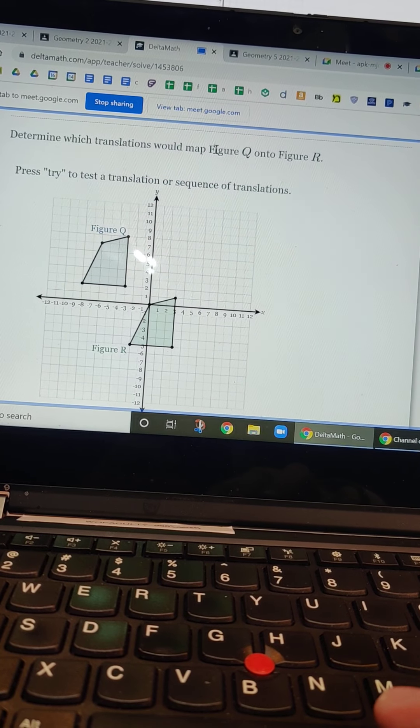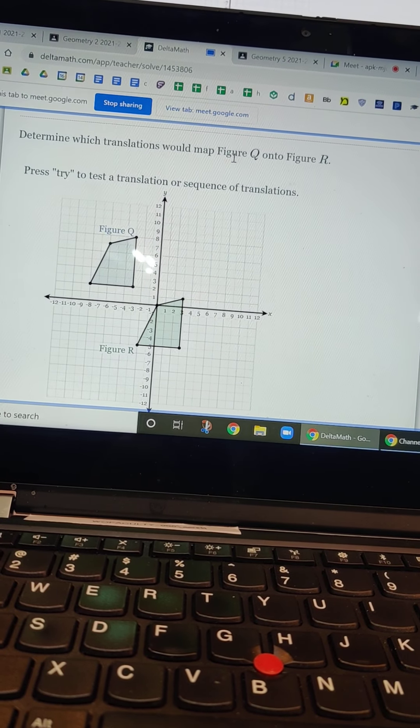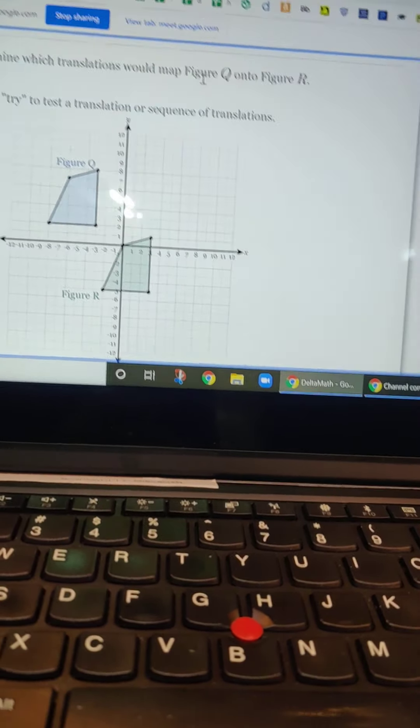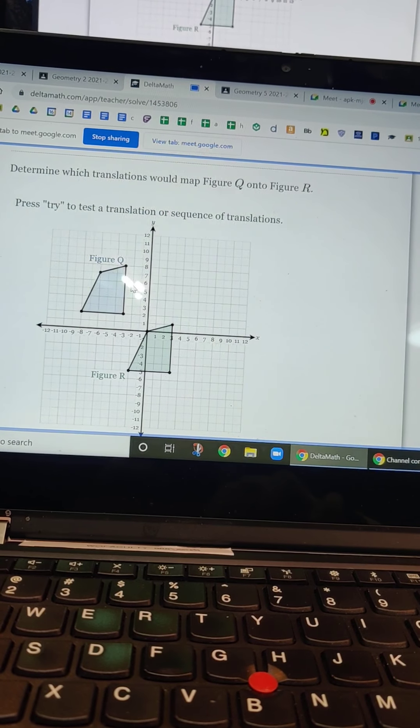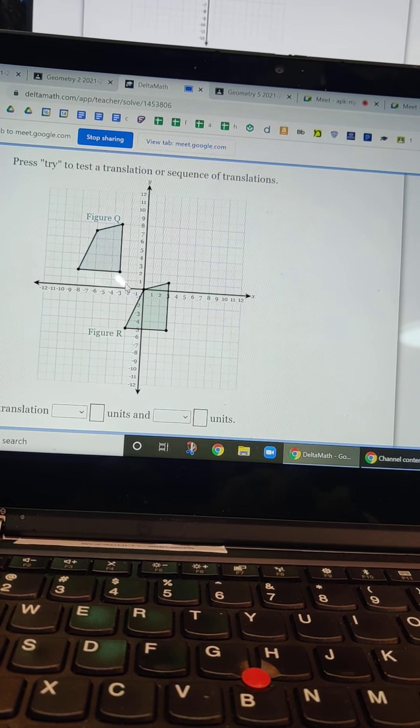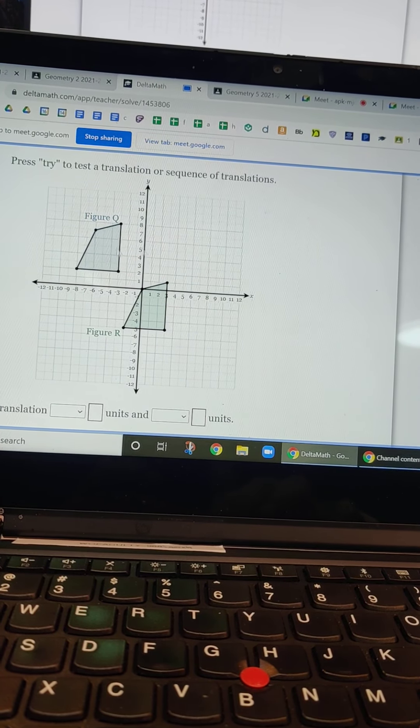So look at this, determine which translations would map figure Q onto figure R. So the one that's mapping it, like mapping means like redraw it. Figure Q is the first one and it's going onto figure R, meaning R is the end product. So it's important to know that Q is the first one and R is the second one.